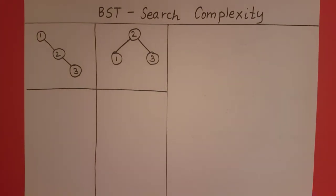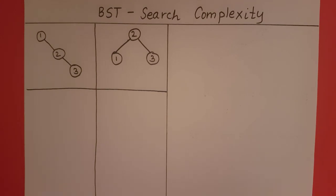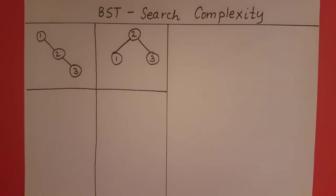When we search in a binary search tree, we first start our search at the root. We compare the value we are searching for with the value at the root. If that value is less than the root, we search in the left subtree. If it is greater, we search in the right subtree. And if it is equal to the root, we return that we have found the element.